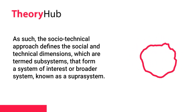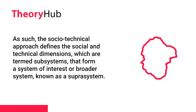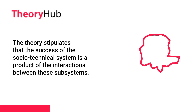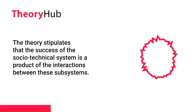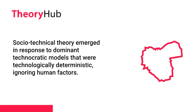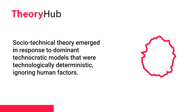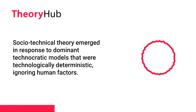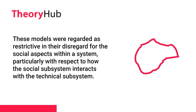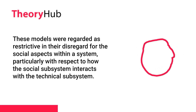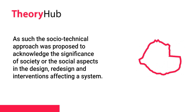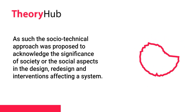The socio-technical approach defines the social and technical dimensions, termed subsystems, that form a system of interest or broader system known as a suprasystem. The theory stipulates that the success of the socio-technical system is a product of the interactions between these subsystems. Socio-technical theory emerged in response to dominant technocratic models that were technologically deterministic and ignored human factors, regarded as restrictive in their disregard for social aspects and how the social subsystem interacts with the technical subsystem. The socio-technical approach was proposed to acknowledge the significance of the social aspects in the design, redesign and interventions affecting a system.